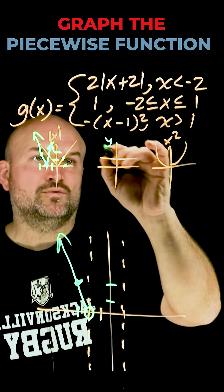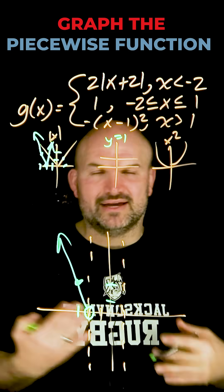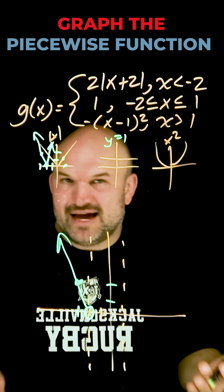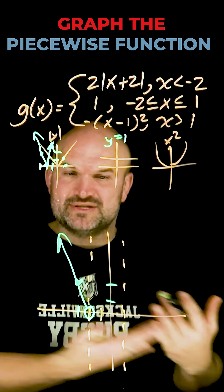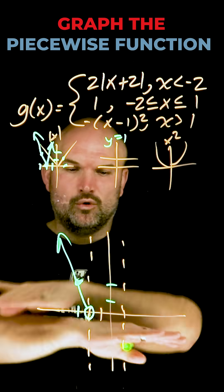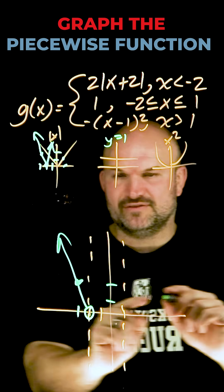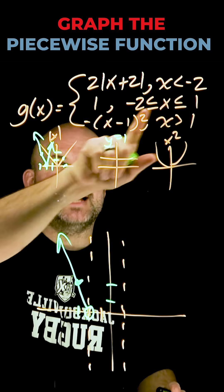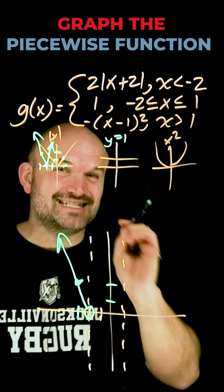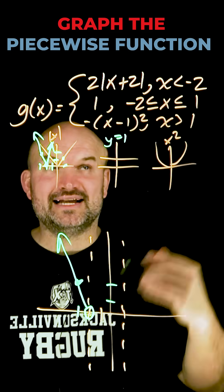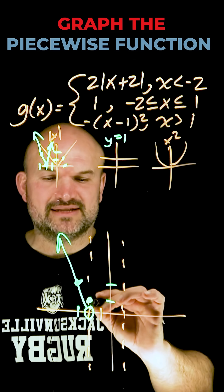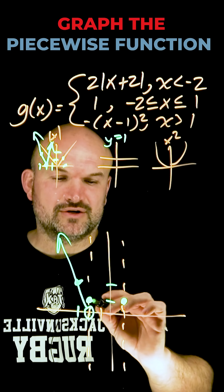Now in this case, I have y is equal to 1, and if you remember, like y equals mx plus b, if you don't have a mx, then you know that your slope is going to be 0. So this is just going to be a horizontal line, right? But you're not going to graph it for all x, you can only graph it between negative 2 and 1. And again, x is less than or equal to negative 2, and x is less than or equal to 1, so therefore, that's going to be a solid circle to a solid circle.